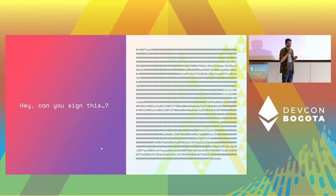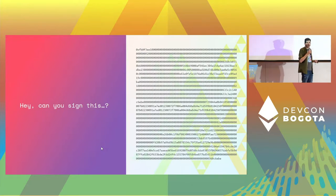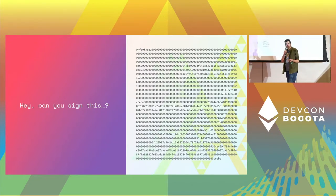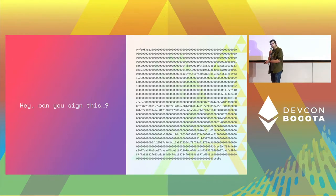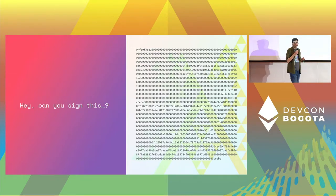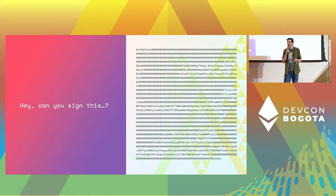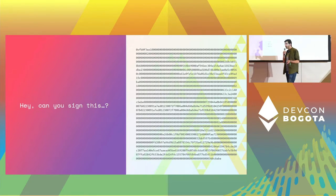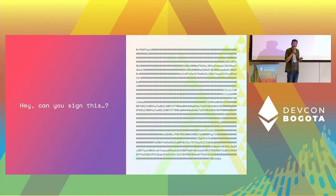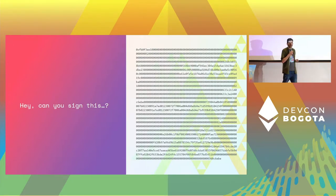The scope for today is to go through a series of tools and techniques that we can use to actually verify and understand what you are signing. Just like you understand what you sign in real life, you should do the same when dealing with internet money. Importantly, the tools should be understandable for non-technical people. In a multisig it's very often that you have the CEO, COO, and contributors who are not necessarily technical, so we want to make sure they are able to review and understand what they're signing.